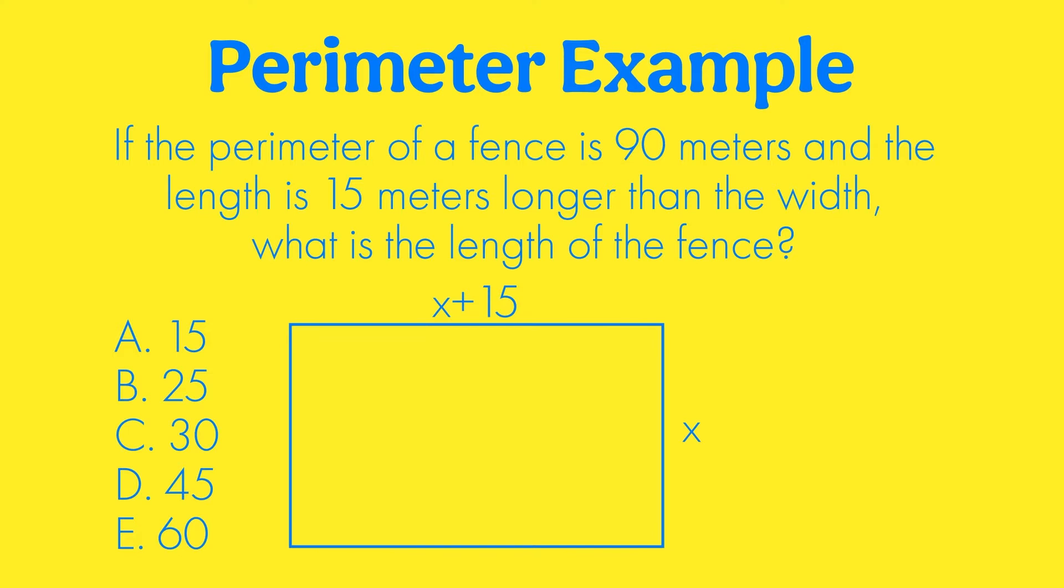But then what you can do is you can use the answer choices to help you figure out what would work for it to be a perimeter. So if you have X and X plus 15 labeled on there, then you can use the answer choices to plug in and guess and check. You also instead could say, oh well, if I know that one side is X and the other side is X plus 15, then I know my perimeter is X plus X plus X plus 15 plus X plus 15 because there are four sides and two of them are the same and then the other two are the same. So then I can combine that and that is 4X plus 30 and I know that 4X plus 30 equals 90. So then I subtract 30 from both sides and I get 4X equals 60. So I know my X equals 15.